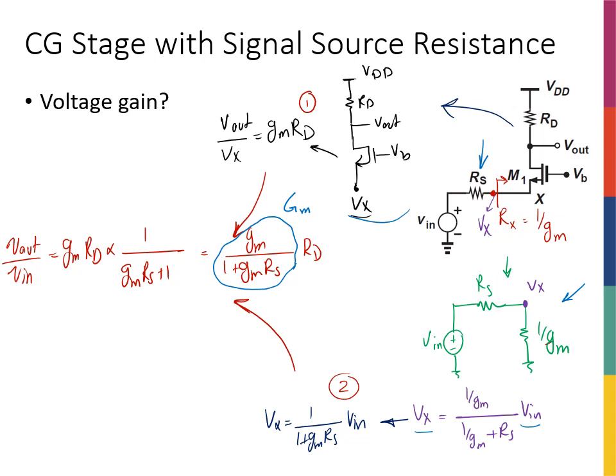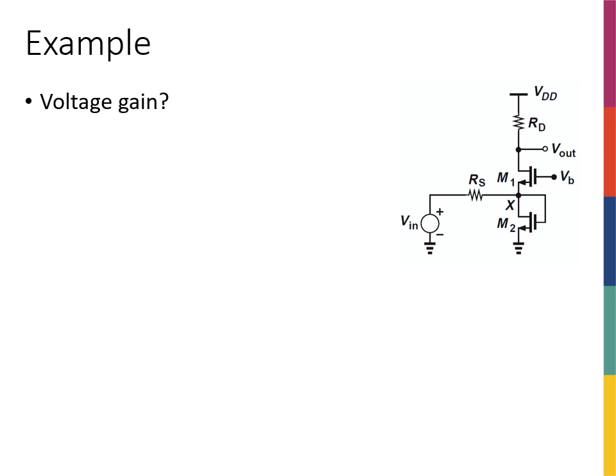Let's do another example. A new circuit is given and we want to find the voltage gain. We'll use the same trick: if I can relate Vx to Vin, then I know that Vout/Vx from three slides ago equals gm·Rd. All I need is the relationship between Vx and Vin. I'd ask you to pause, try to calculate this yourself and figure out the gain, and then resume the video to check your answer.